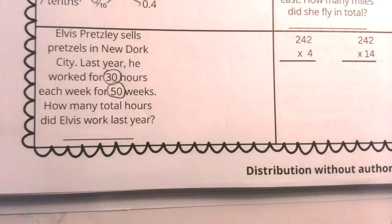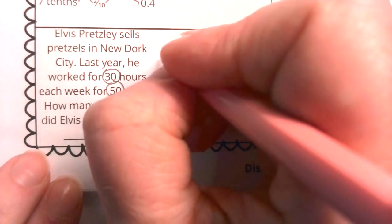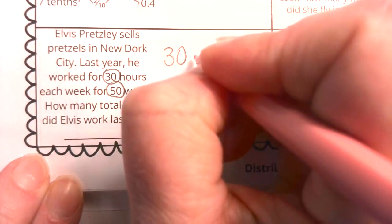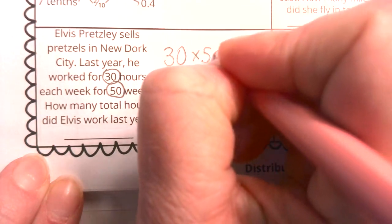To figure out in 50 weeks with 30 hours each week how many hours he worked in the whole year, we're going to need to multiply. So we're going to need to take 30 and multiply it by 50.